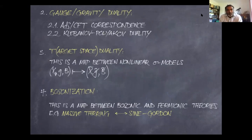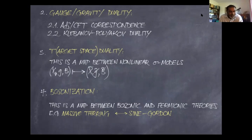The example of duality that those of us working in quantum gravity and string theory tend to focus on most is gauge-gravity duality — the statement that gauge theory, a theory of matter, is intimately related to theories of gravity. There are many known examples, the most famous being Maldacena's AdS/CFT correspondence, which states that quantum gravity in five-dimensional anti-de Sitter space is dual in a precise sense to Yang-Mills theory living on the boundary of that AdS₅ space.